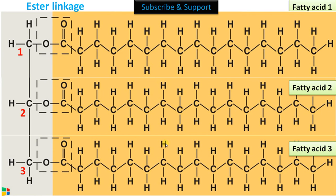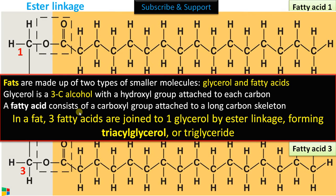Now let us summarize. Fats are made up of two components — glycerol and fatty acids. Glycerol is a three carbon alcohol with a hydroxyl group attached to each carbon. A fatty acid consists of a carboxyl group attached to a long carbon skeleton, or it's a long chain hydrocarbon with a carboxyl group at one end. In a fat, three fatty acids (one, two, three) are joined to one glycerol molecule by ester linkage.